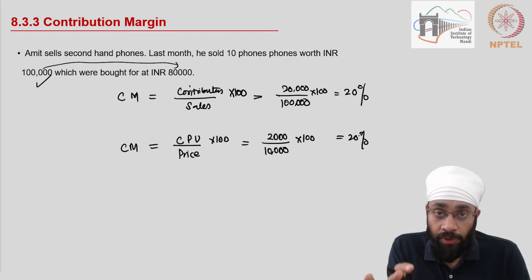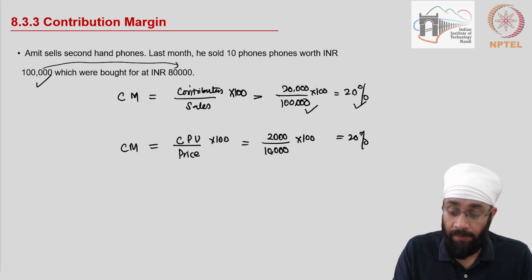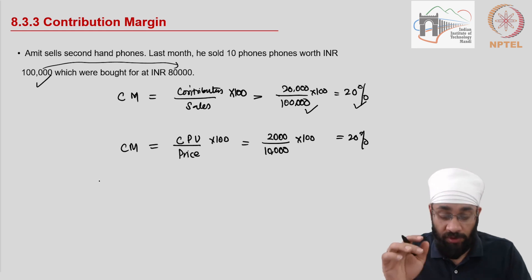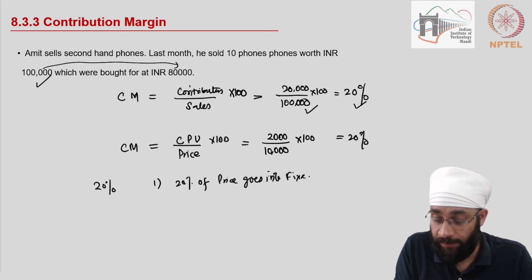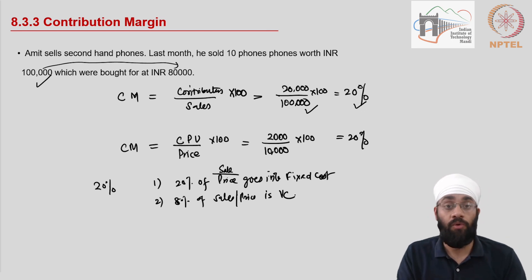Now what is important to be understood here? What is the interpretation of the contribution margin? What is its use? That is what we need to understand. So out of 1 lakh that you sell, 20% is the contribution margin. So contribution is available towards covering the fixed costs. Now contribution margin of 20% tells us, number one, that 20% of the price goes into fixed cost coverage. Which means 80% of the sales or the price is our variable cost only.